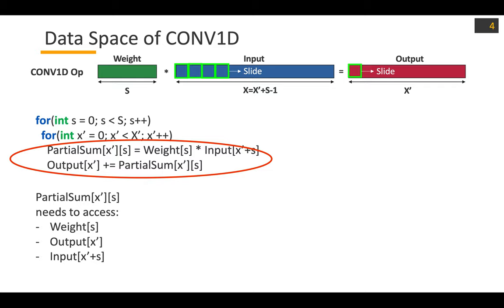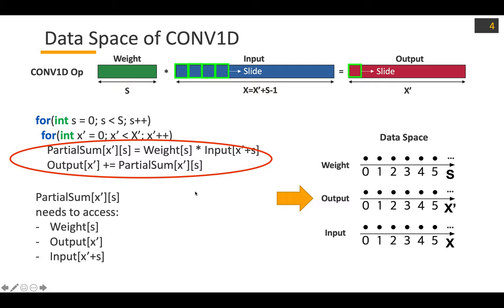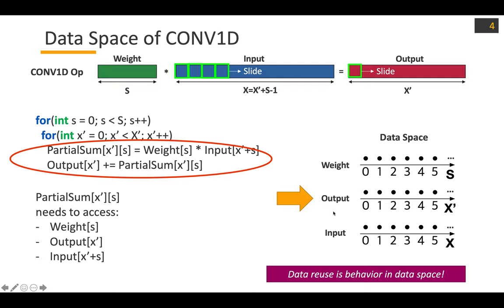Based on this loop nest, we can also construct the data space. Looking at the loop nest, we can immediately identify the partial sum coordinates: weight S, input X prime plus S, and output X prime. Based on these relationships, we can mark corresponding data points for each computation. Note that data reuse is a behavior in data space, and this is the prime target model for the cost of the DNN layers, because data reuse is critical for energy, which is the prime optimization target.